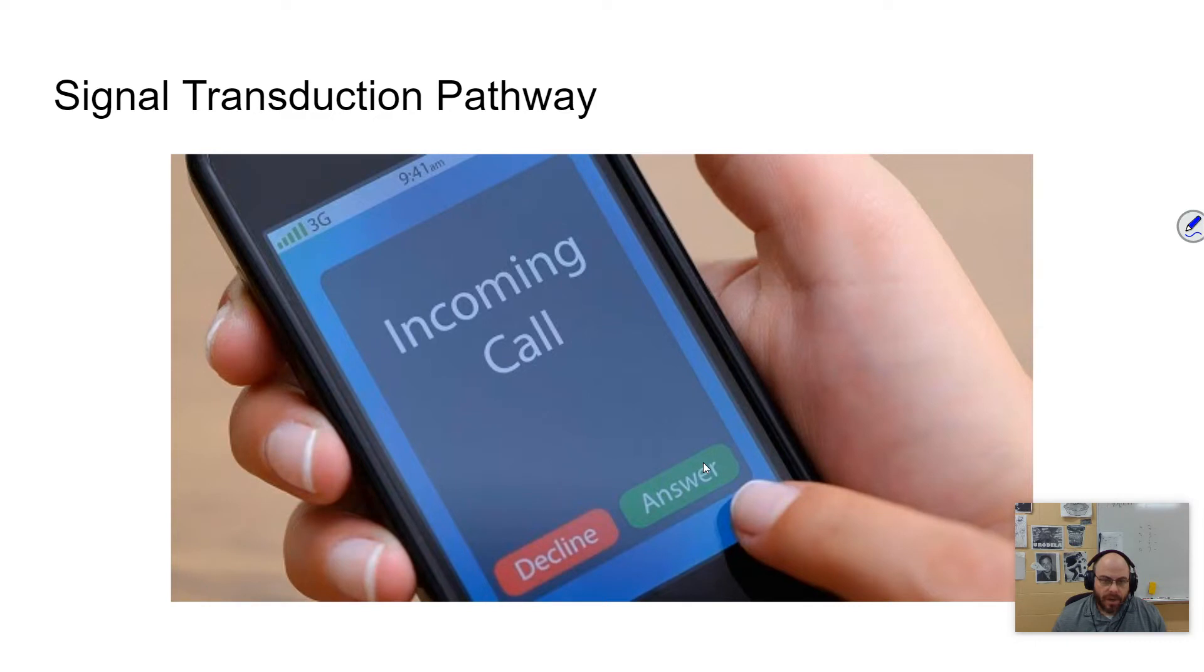The signal transduction pathway has three stages, and the way that I like to think about it is like a phone call. So if my phone is ringing, that ringing is a signal. And when I receive that signal, I know exactly what that means. It means that there's someone that wants to talk to me. That would be the reception of that.